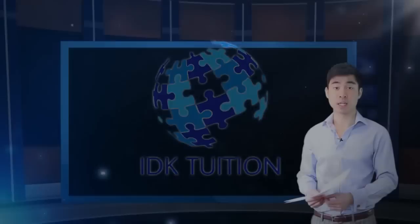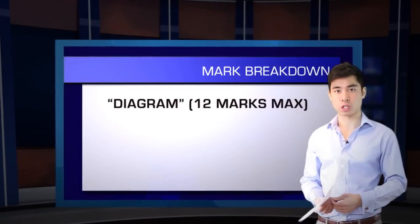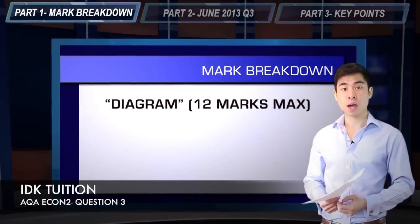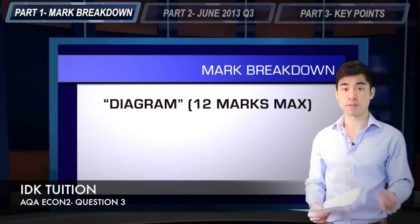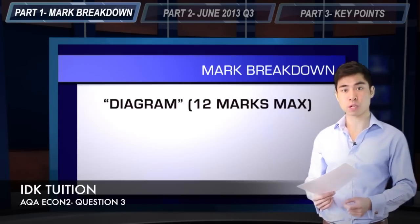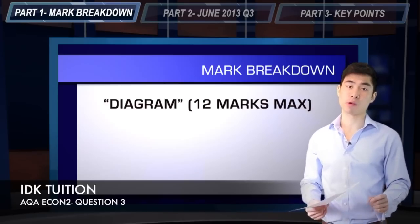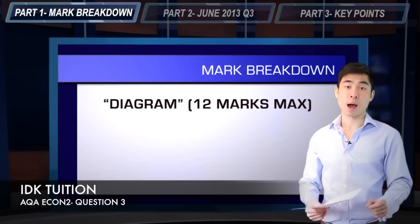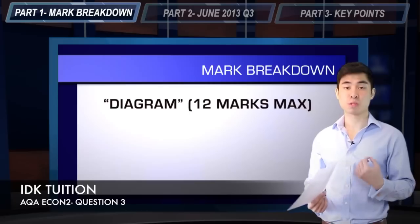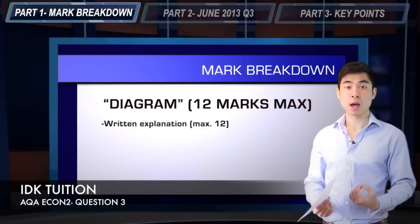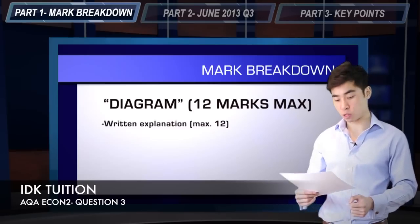The 12 mark question in unit 2 is more difficult than the 12 mark question in unit 1, simply because in unit 1 you're always going to draw your demand and supply diagram for four marks. In unit 2, it's much more difficult to interpret exactly the diagram the examiner is looking for. That said, the 12 mark question in unit 2 isn't specifically a diagram question — in a lot of cases, you can actually pick up all 12 marks without drawing a diagram at all.